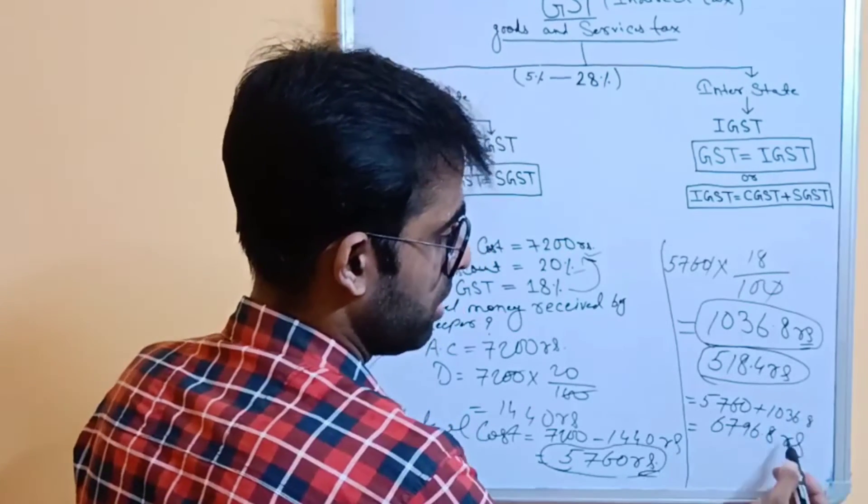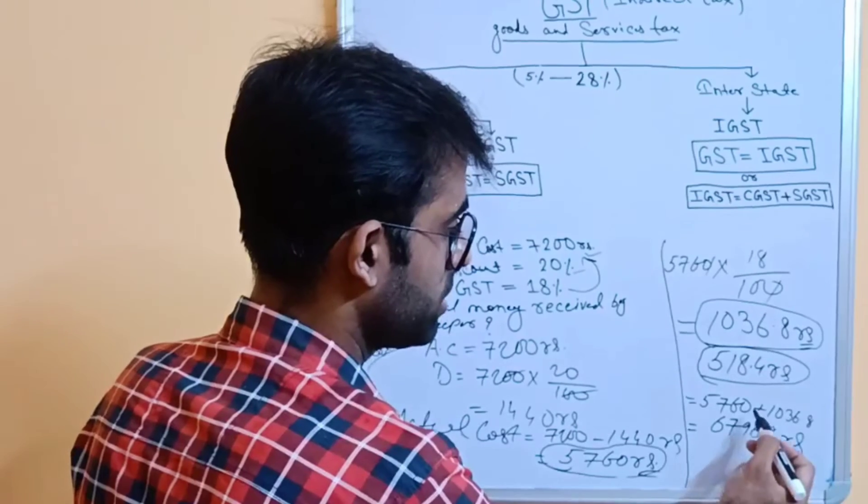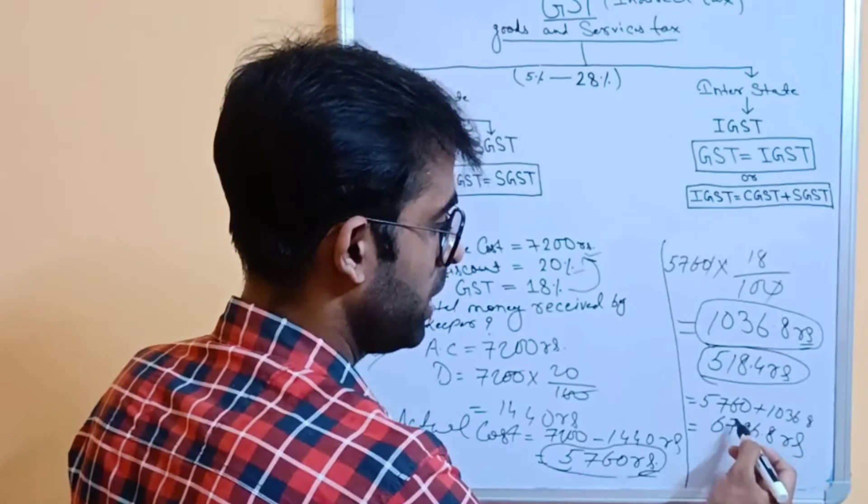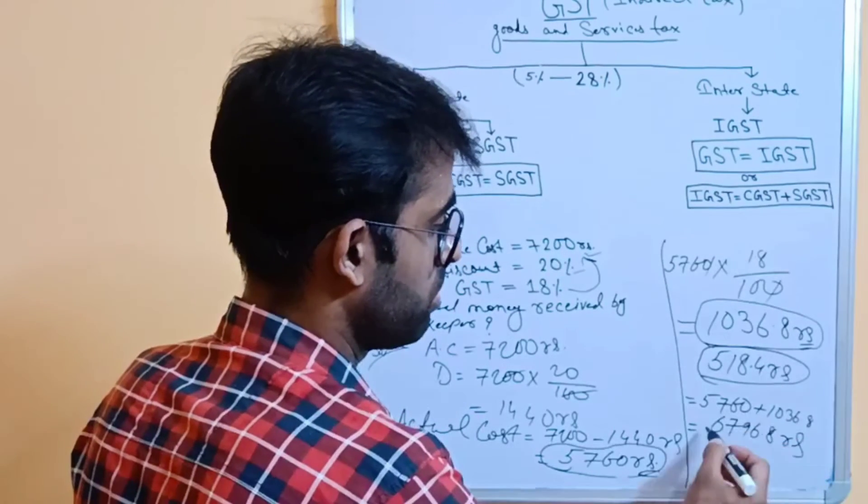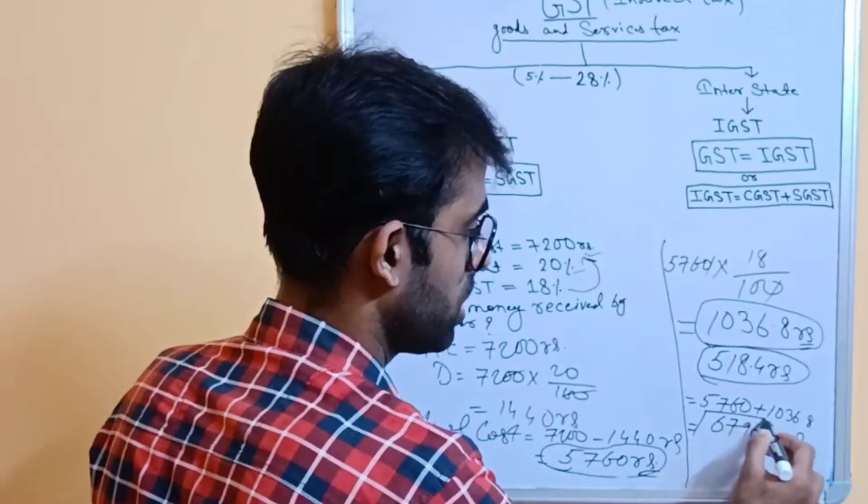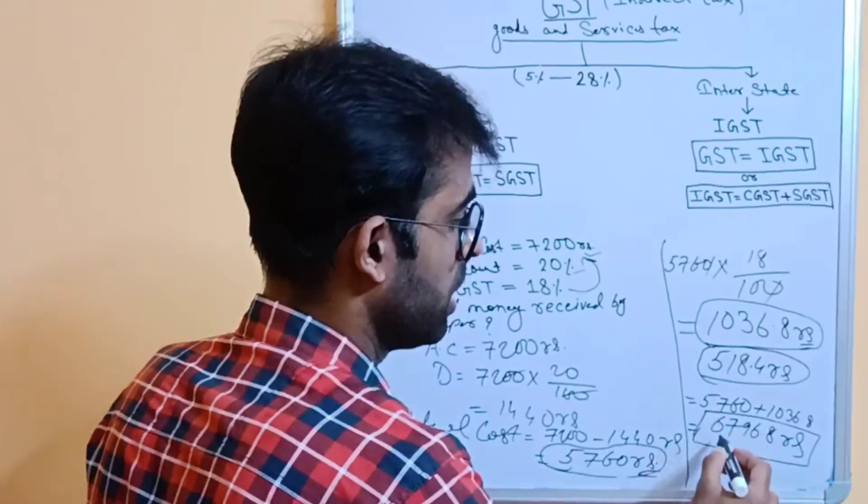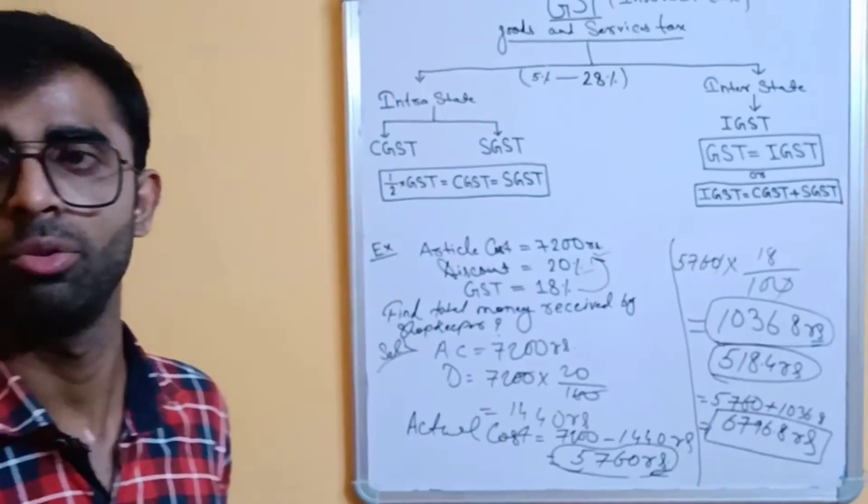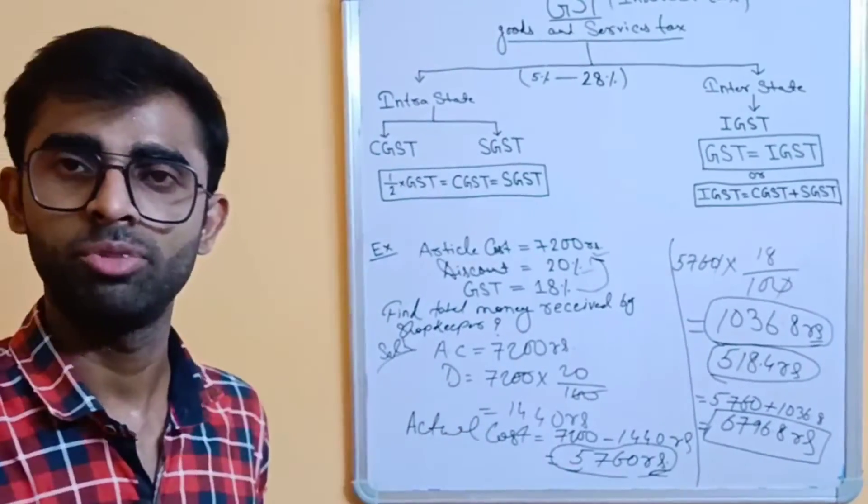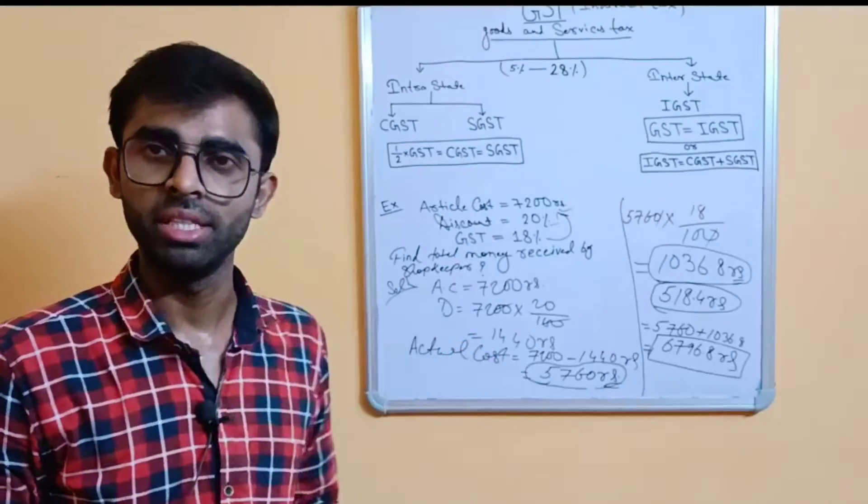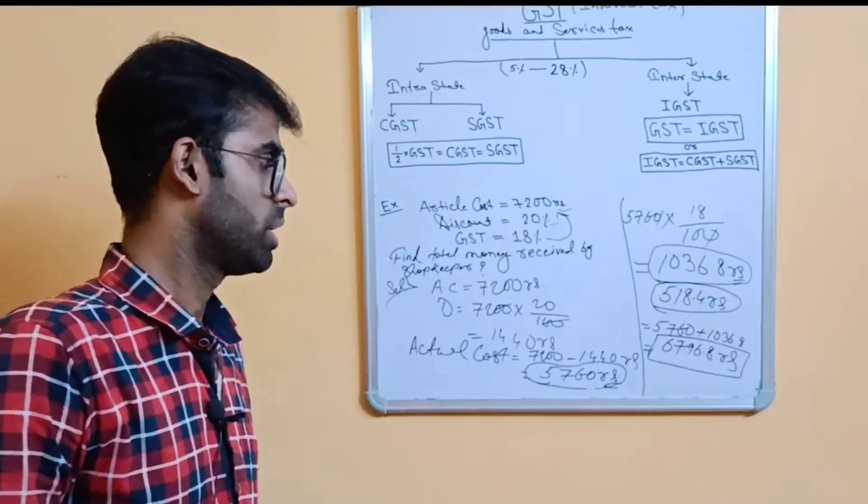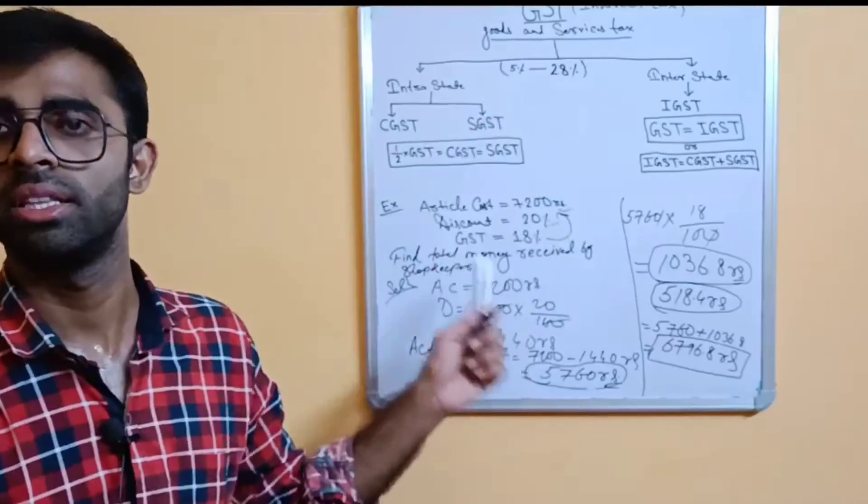Just recheck: 8 plus 6 is 6, 6 plus 3 is 9, 5 plus 1 is 6. So, the final value is 6796.8 rupees. So, this type of problem you will see in this chapter. I hope everything is clear in this chapter.